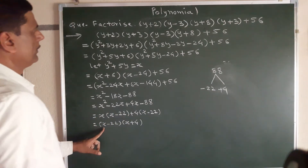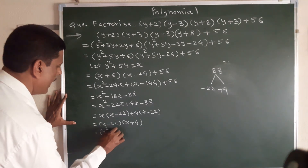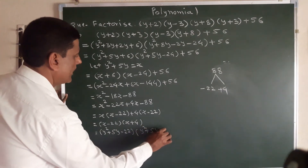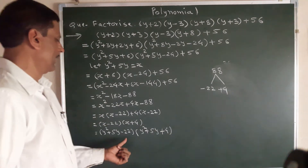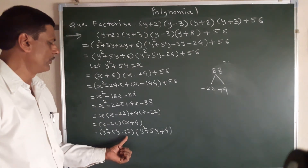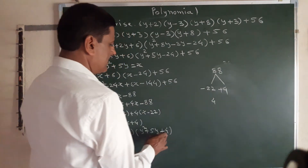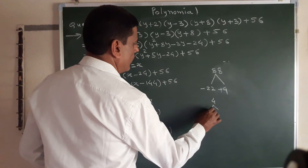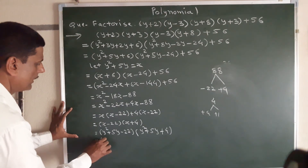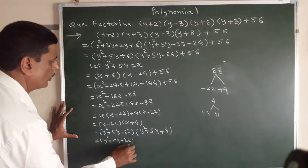But we know that x equals y squared plus 5y. Substituting back, the first bracket becomes (y squared plus 5y minus 22) and the second bracket becomes (y squared plus 5y plus 4).